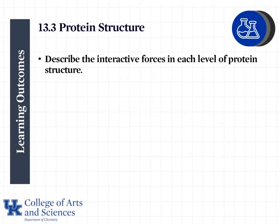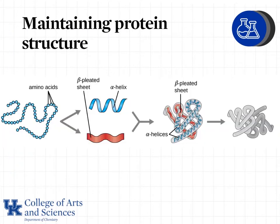In the previous lesson, we talked about the different levels of structure in proteins and how they form a shape, and we mentioned those forces. In this lesson, we're going to describe those interactive forces that occur in each level of protein structure. We have four levels of protein structure, and for proteins and enzymes to function correctly, they must have the correct structure, not just the correct sequence of amino acids.